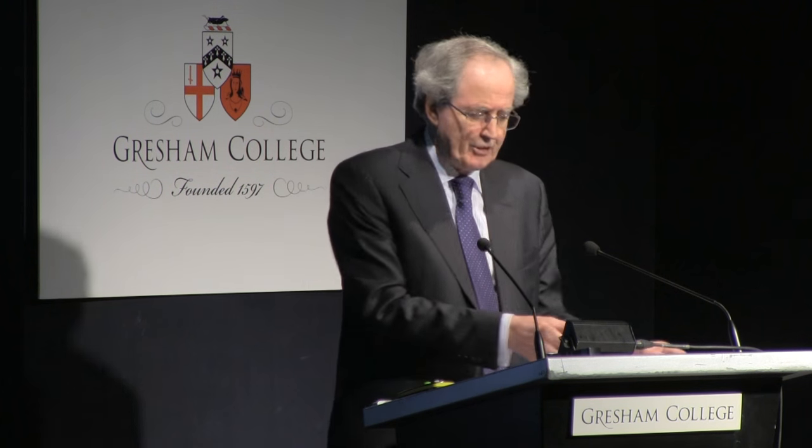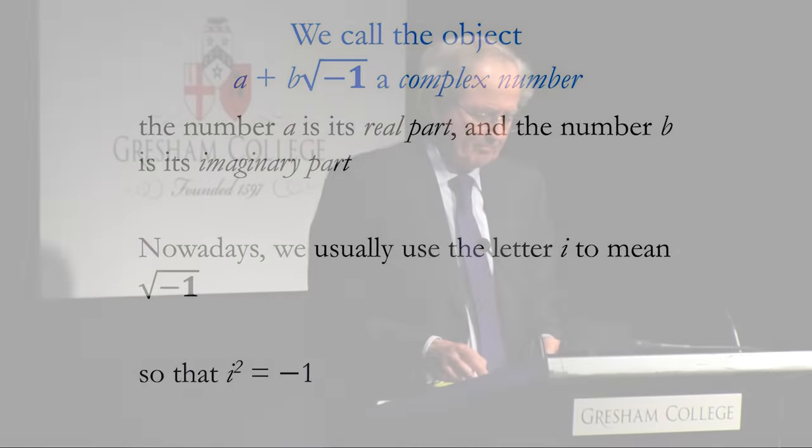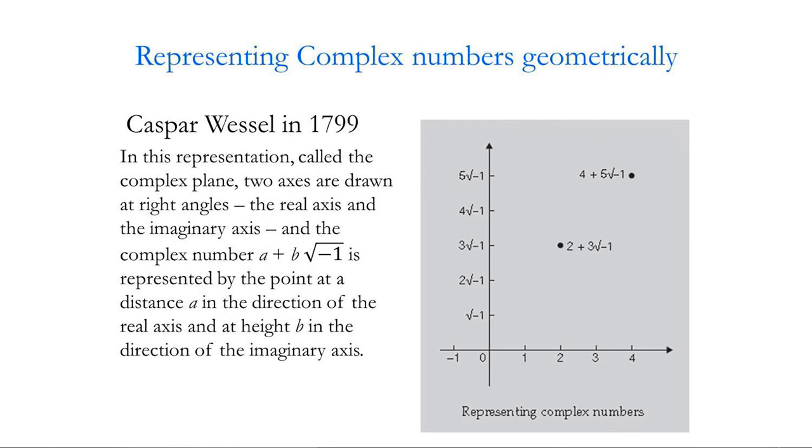Just a little bit of notation: we call the compound thing a + b√(-1) a complex number with a being the real part and b being the imaginary part. Then some notation which will be helpful in a minute. We usually use the letter i to denote the square root of minus one, so i² = -1. There was a way of looking at them which went back to 1799, to a Danish navigator Caspar Wessel. In his representation of complex numbers, a geometric representation, he used what was called the complex plane. Two axes are drawn at right angles, the real axis and the imaginary axis. I've written down two complex numbers: one where you go two units in the real direction and three units in the imaginary, and another where you go four units in the real direction and five units in the imaginary.